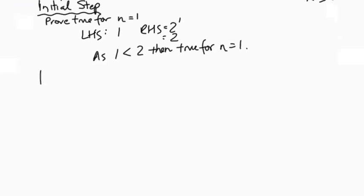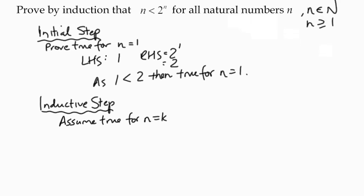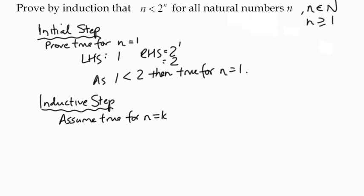So inductive step. We need to assume true - we're going to make a statement here. Assume true for n equals k. So what is that statement that we're going to declare?